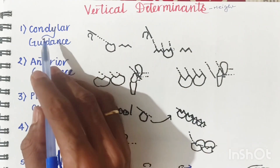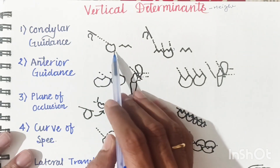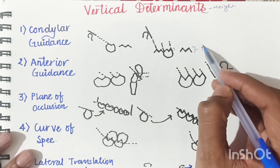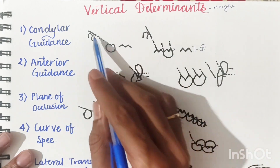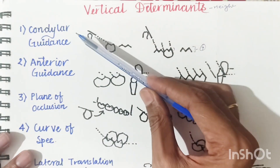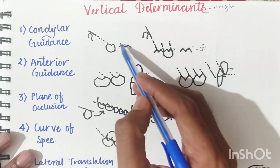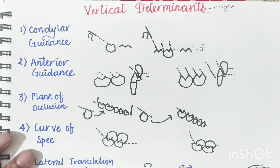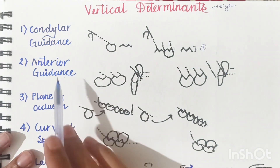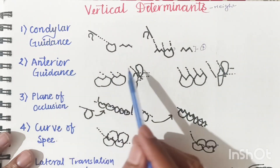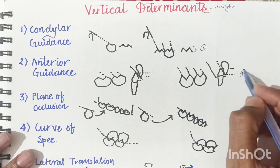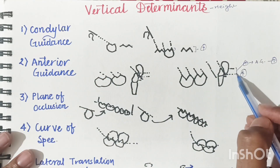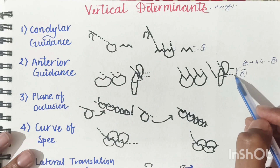The first vertical determinant is condylar guidance. As condylar guidance becomes steeper, the cusp becomes sharper and height increases. If the condylar guidance is shallower, then the cusp height decreases and the cusp will be shallower. The second is anterior guidance — if anterior guidance increases, the cusp will be sharper.